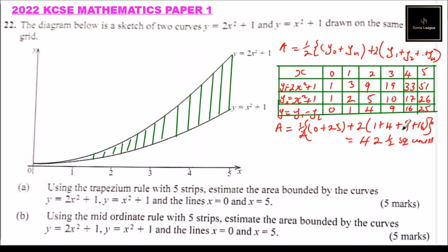So the area from Part A is 42 and a half square units. Moving on to Part B: using the mid-ordinate rule, estimate the area bounded by y equals 2x squared plus 1 and y equals x squared plus 1, and the lines x equals 0 and x equals 5.